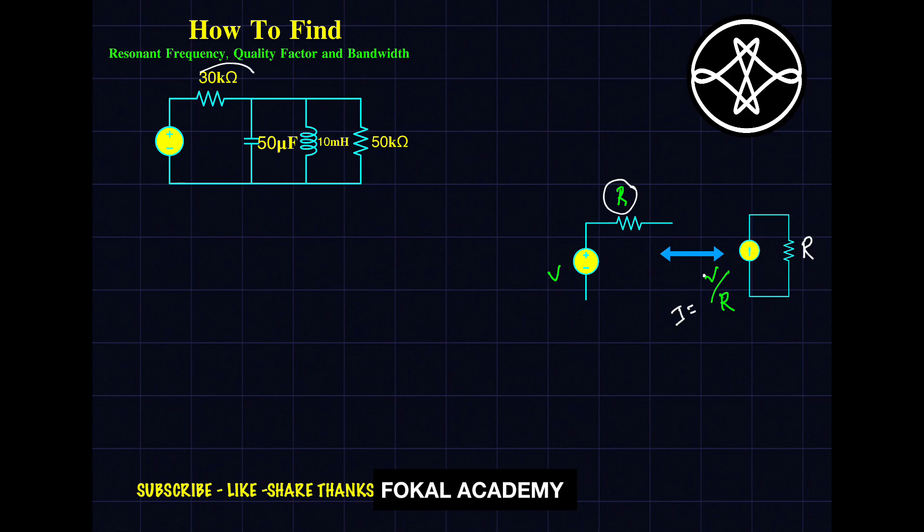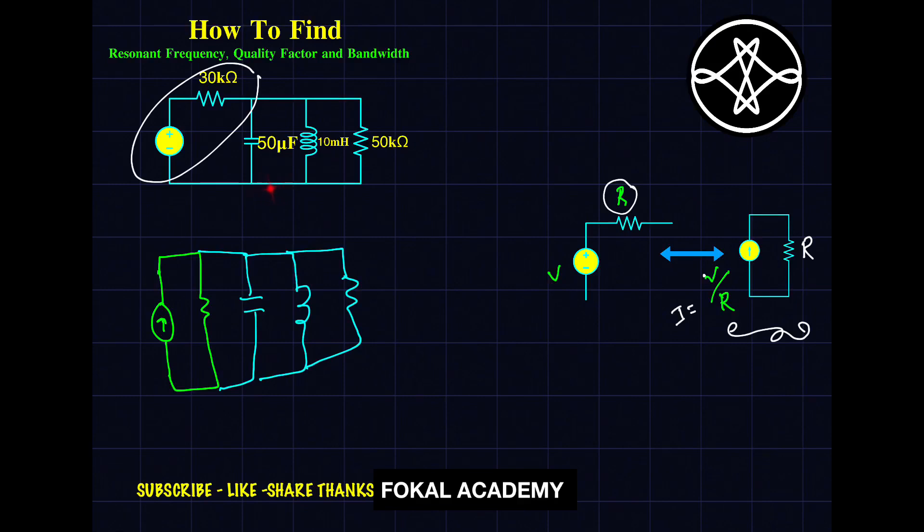Now replace these two elements with this current source and the resistance. Then the circuit becomes like this. Keep these three elements as it is, only these two elements are replaced with these two elements. That is according to source transformation technique. In the place of voltage, there is the current source, so these three resistances will come in parallel.